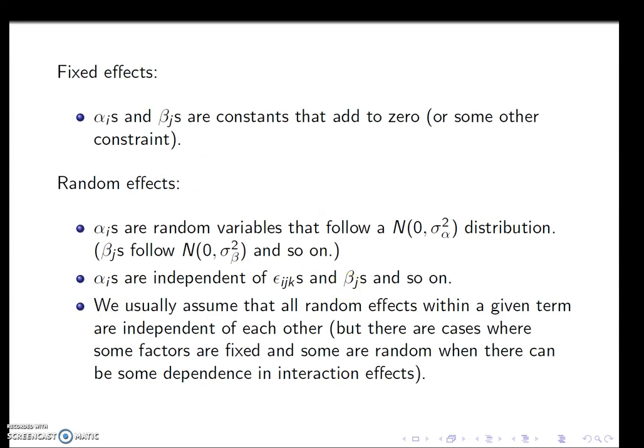For fixed effects, the alphas and betas are constants. They're constant values that we know add to zero, or we could have other constraints as we talked about. Random effects, however, are random values. They follow a distribution, typically normal. It doesn't have to be normal, by the way, but that's what we assume almost all the time. The effects are going to be independent of the random effects, the epsilons in the model and the betas and so on. We usually assume that our random effects within a given term are independent of each other as well. This actually doesn't have to be the case though. We can do more complicated mixed models where we have covariation between these effects as well.